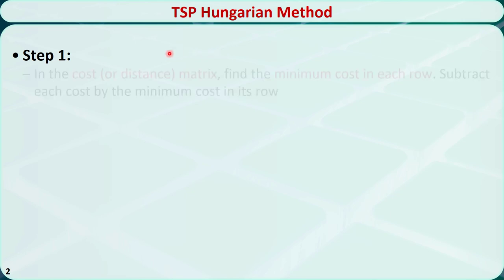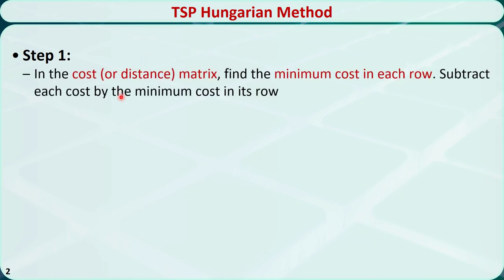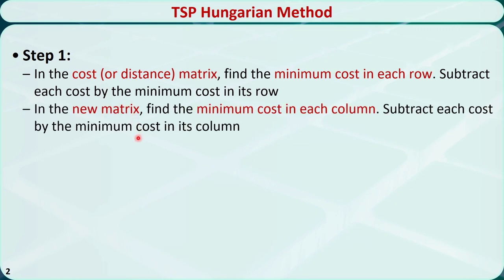The Hungarian method involves two steps, each with some sub-steps. Step 1: in the cost or distance matrix, find the minimum cost in each row and subtract each cost by the minimum cost in its row. In the new matrix, find the minimum cost in each column and subtract each cost by the minimum cost in each column.